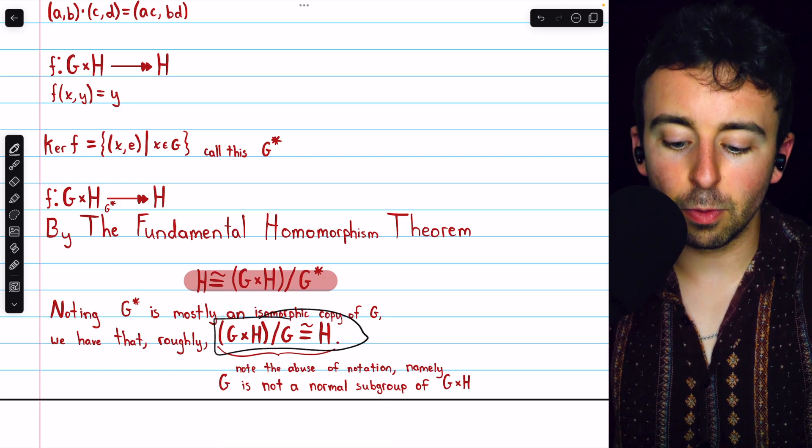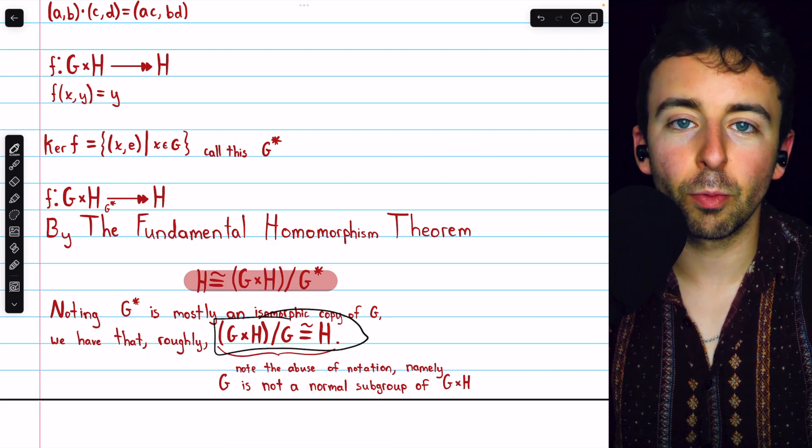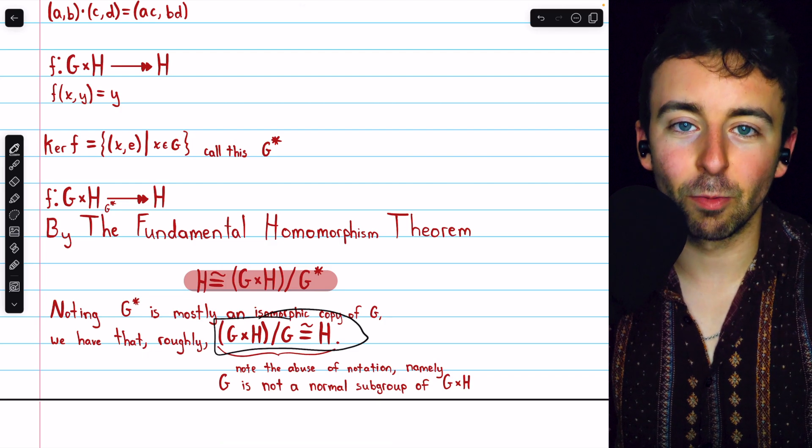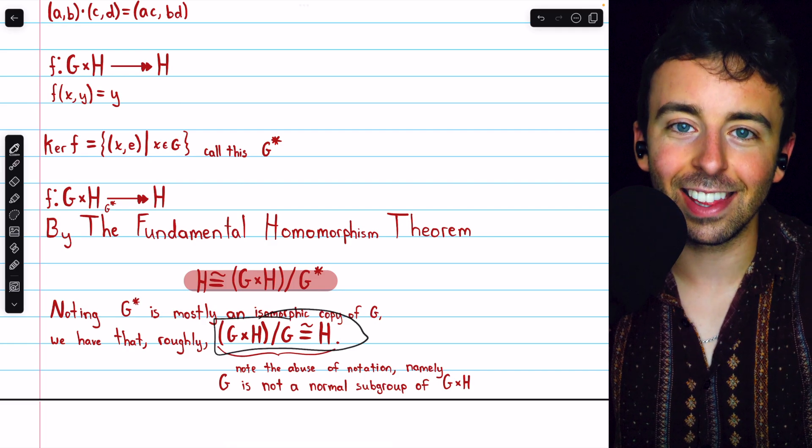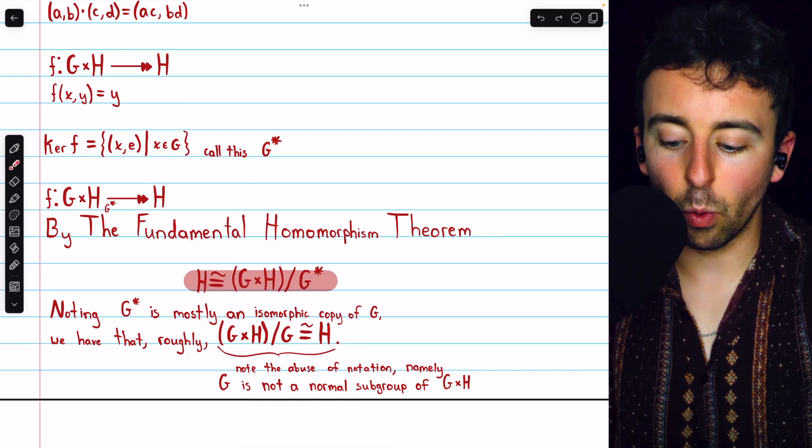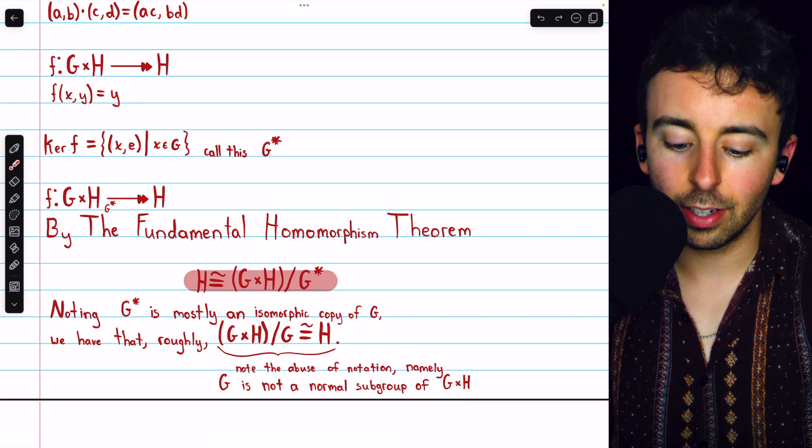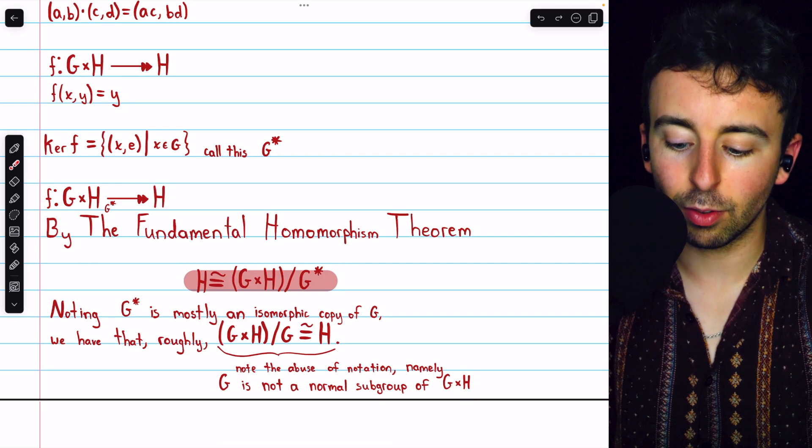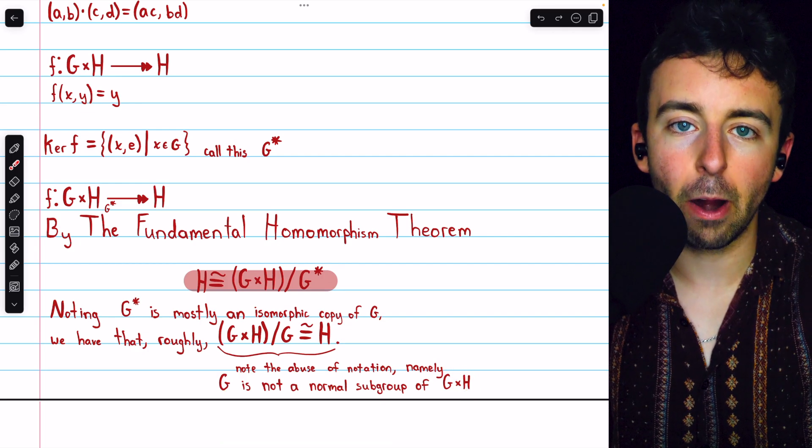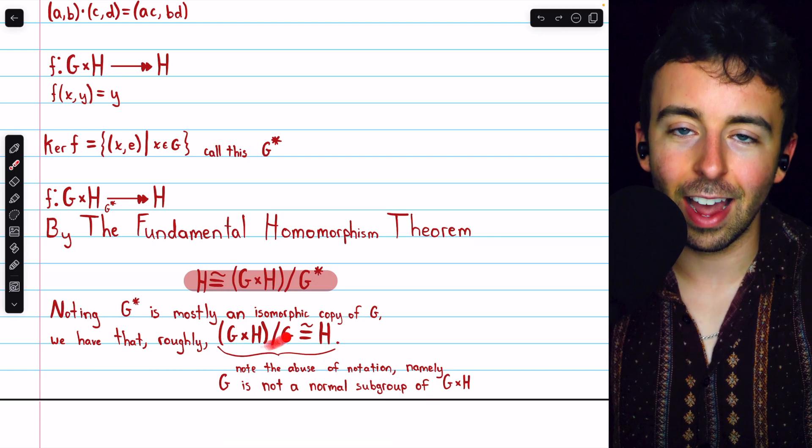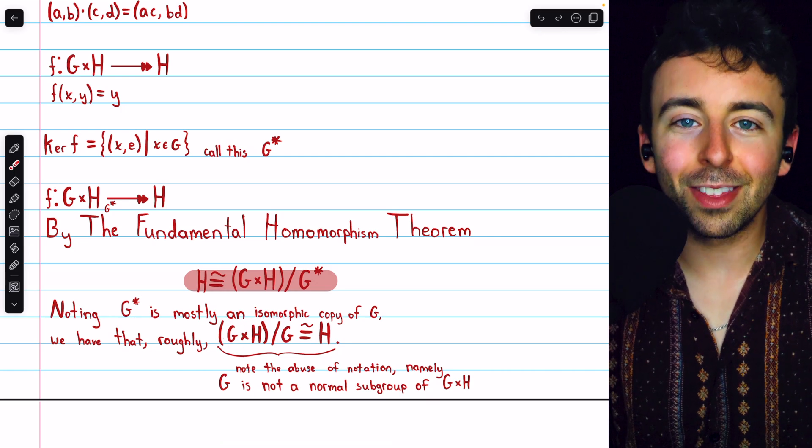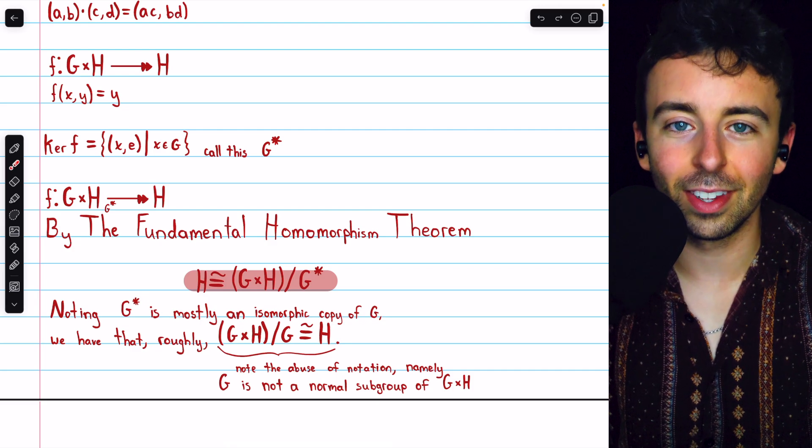This is cute, of course, because it resembles familiar behavior with real numbers. But I do want to again reiterate, it is an abuse of notation. This doesn't actually mean anything because G isn't a normal subgroup of the direct product. G just contains individual elements while the direct product contains ordered pairs. So G is definitely not a normal subgroup. So this technically does not have any meaning. But hopefully you get the spirit of what we're going for with this example.